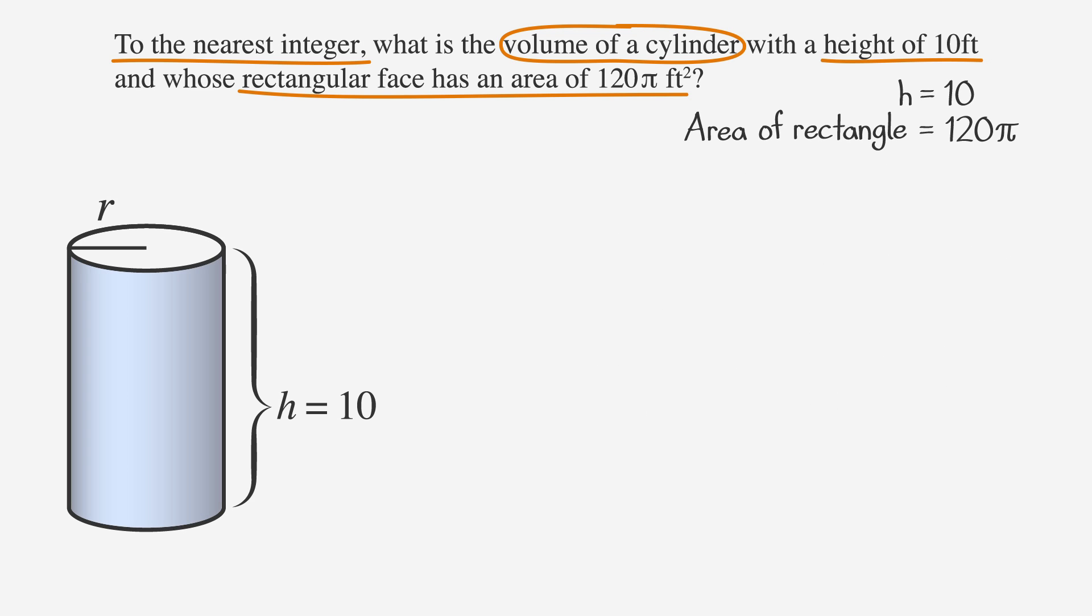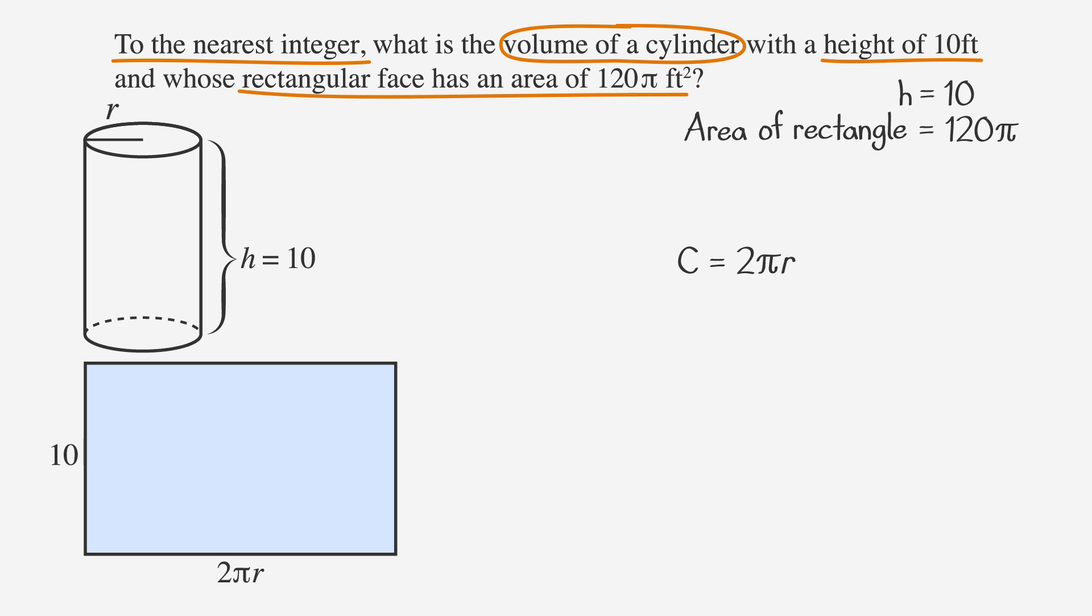So think of the side of a cylinder as a rectangle that's rolled up to make a tube. The width of the rectangle is equal to the height of the cylinder, and its length is equal to the circumference of the base. This means we can find the length by using the formula for the circumference of a circle, which is 2 pi r. And since we know that the area of a rectangle is equal to length times width, we can say that the area of the rectangular side is 2 pi r times height.